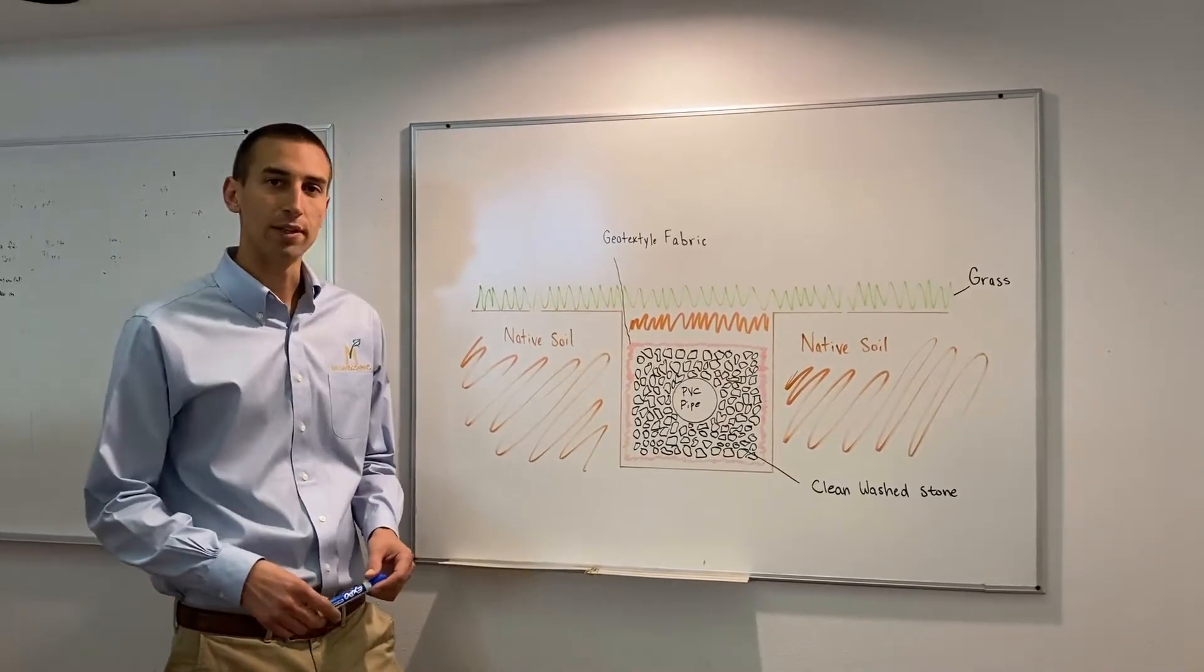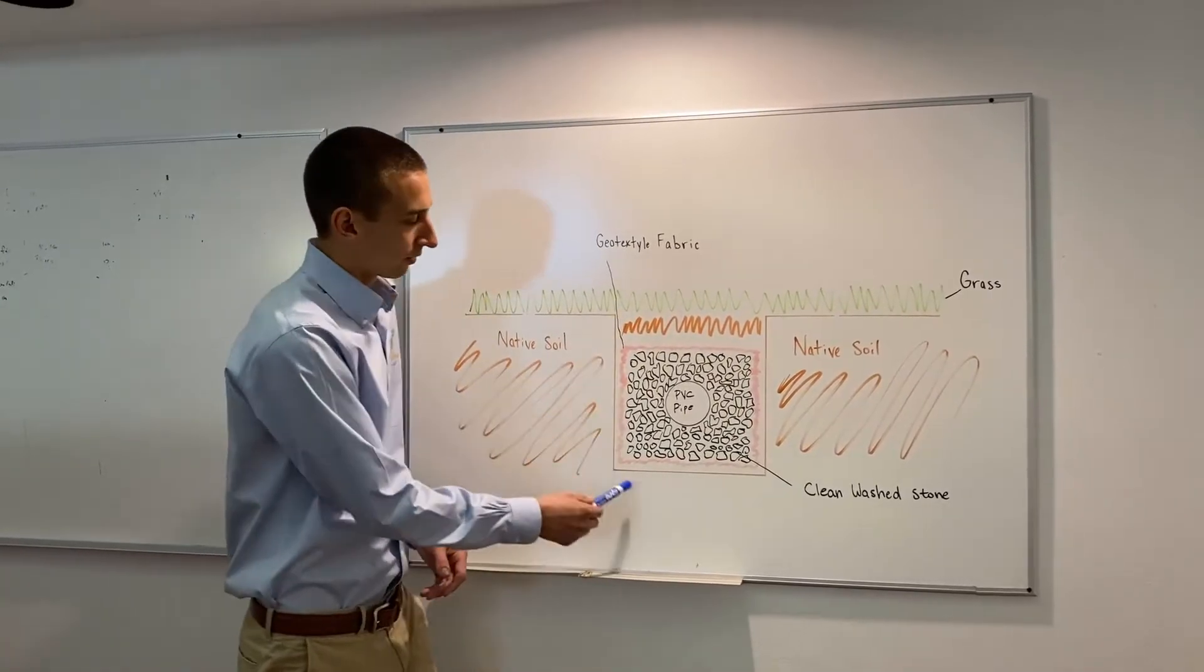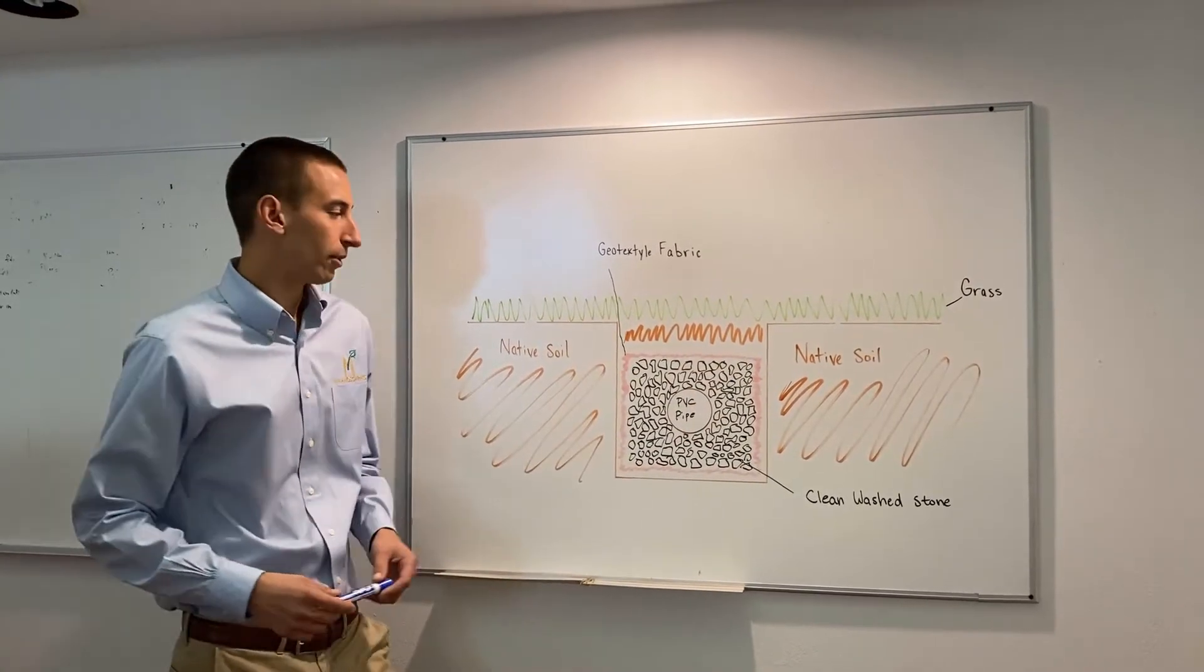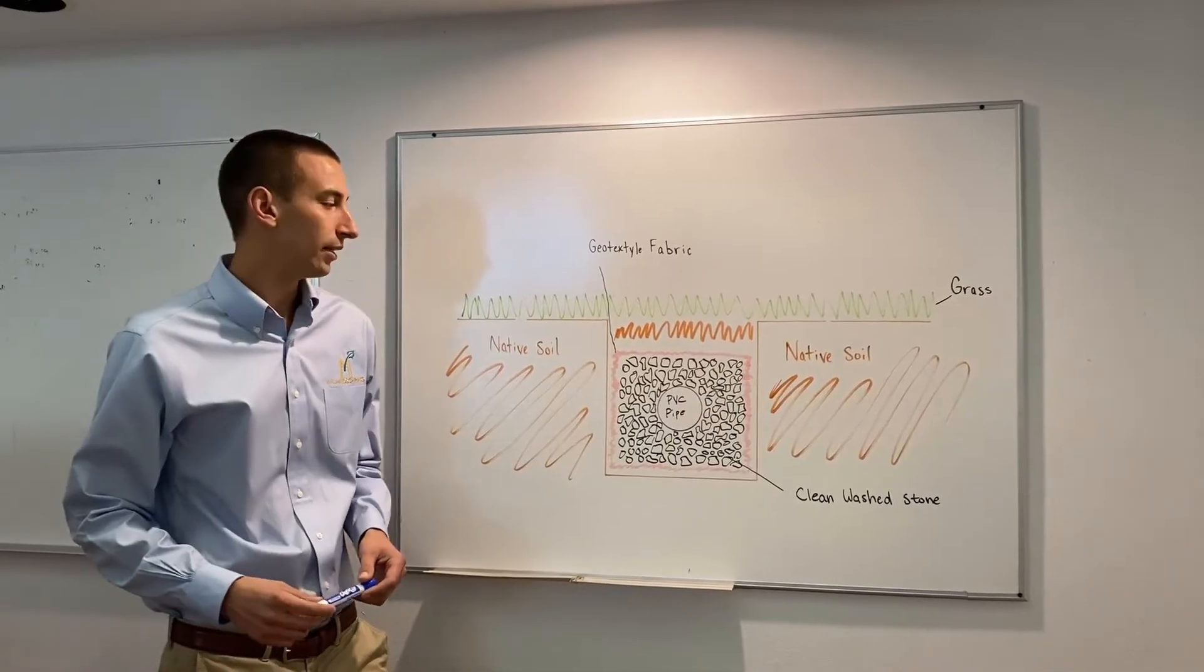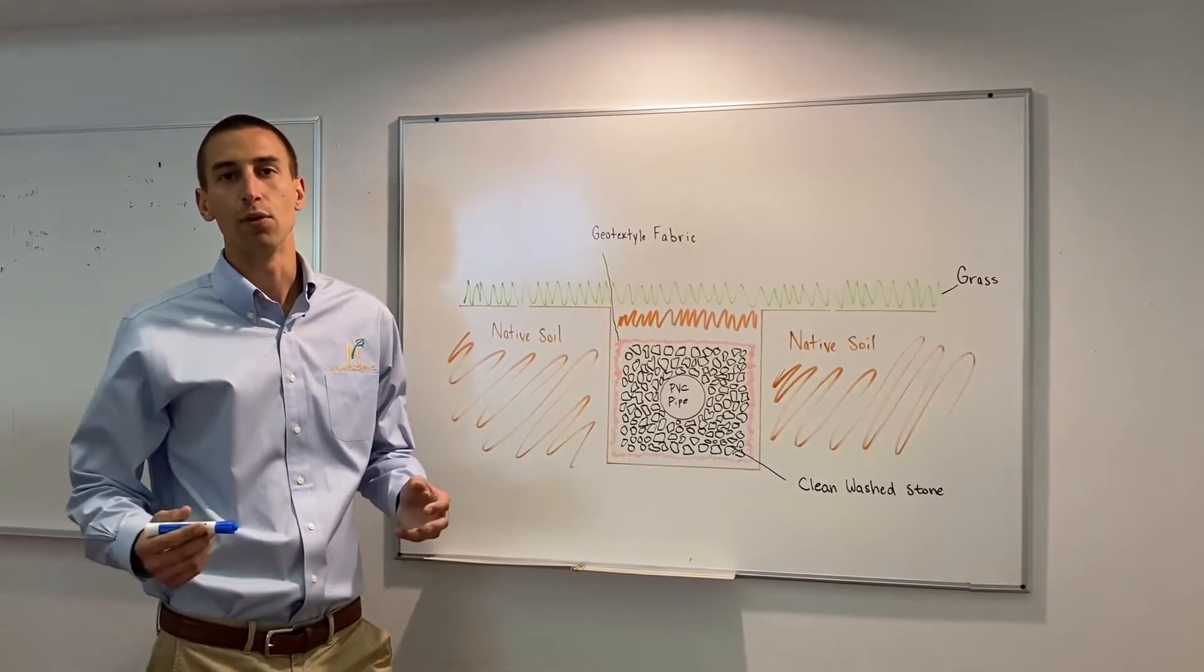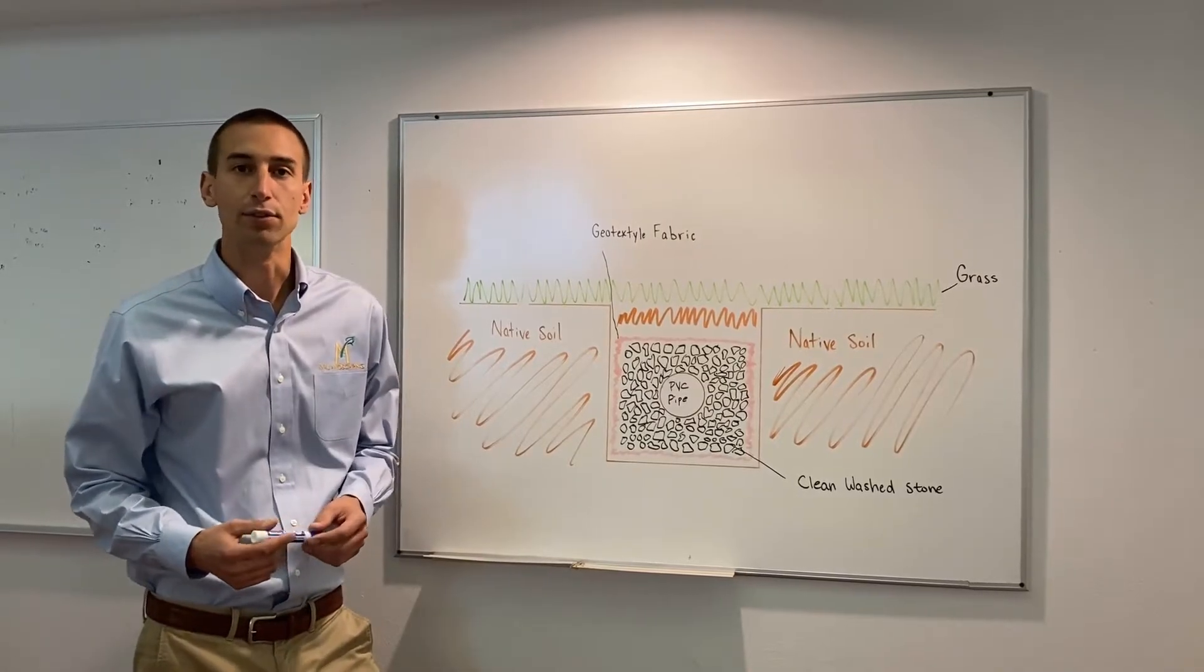The first step in creating a French drain is to dig a trench within the native soil. After the trench is dug, we will add geotextile fabric to line the trench. The purpose of the geotextile fabric is to prevent soil and silt from getting into the trench.